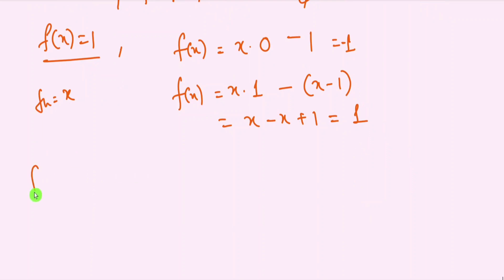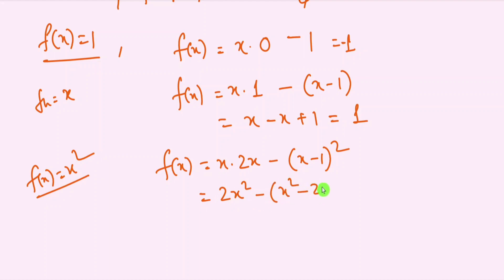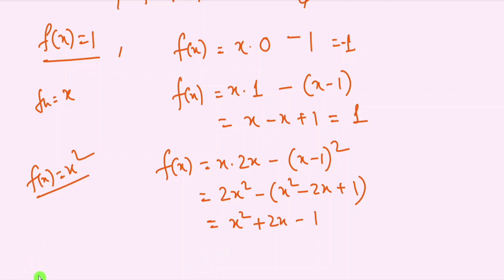For f(x) = x², we get T(x²) = x·2x minus (x−1)², which equals 2x² minus (x² − 2x + 1), equal to 2x² minus x² plus 2x minus 1, which simplifies to x² plus 2x minus 1.